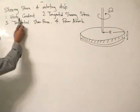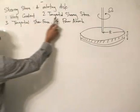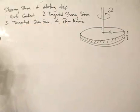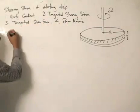The steps we're going to do is to find the velocity gradient, tangential shearing stress, tangential shearing force, and the power absorbed. So let's start with the first one: velocity gradient.